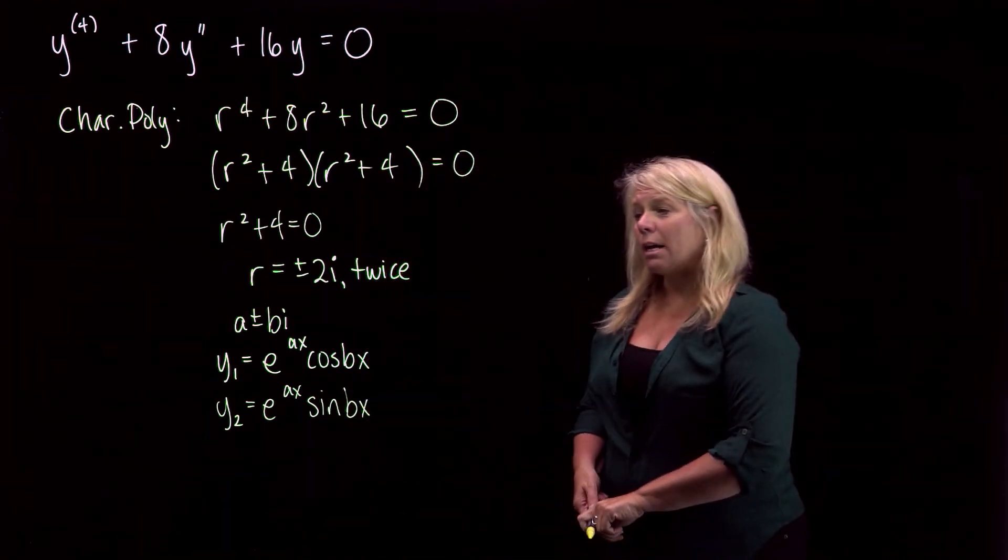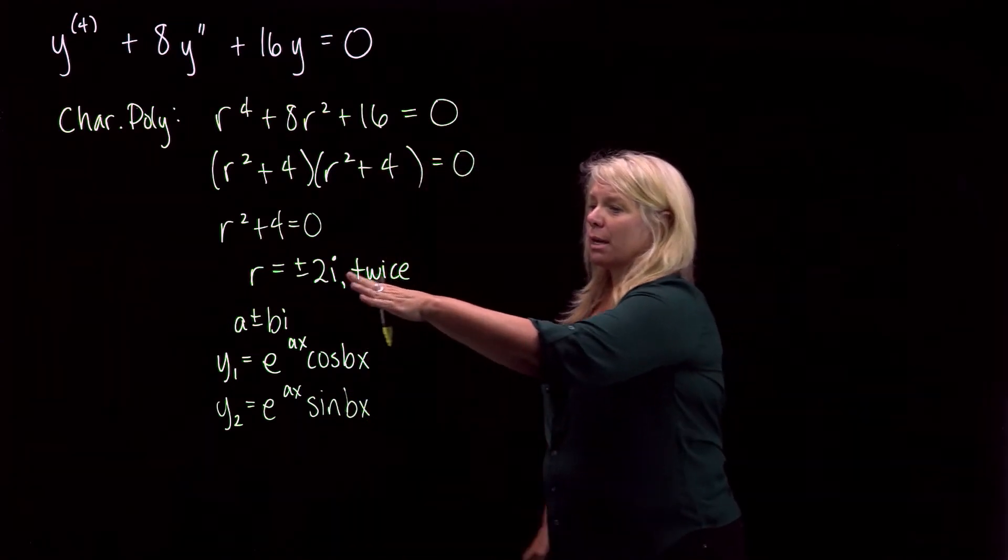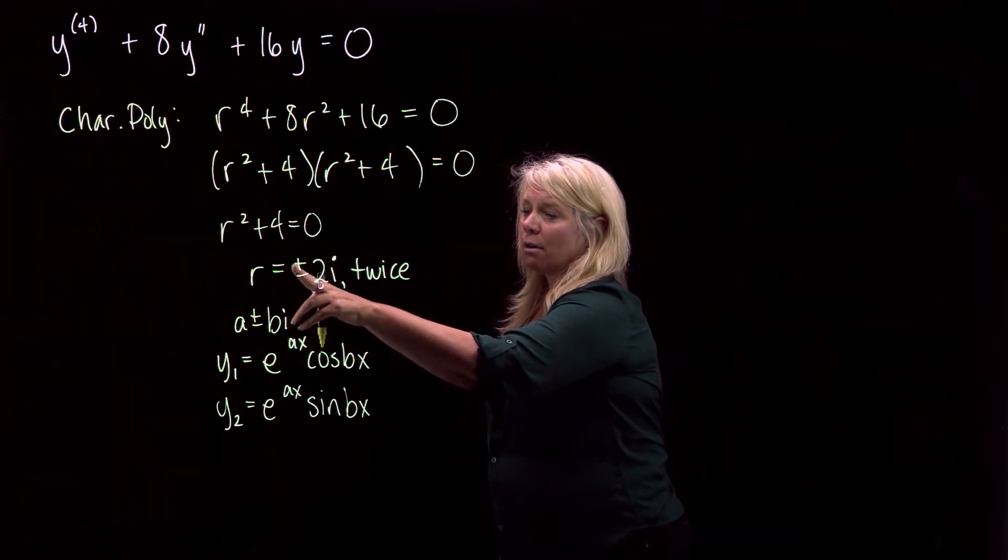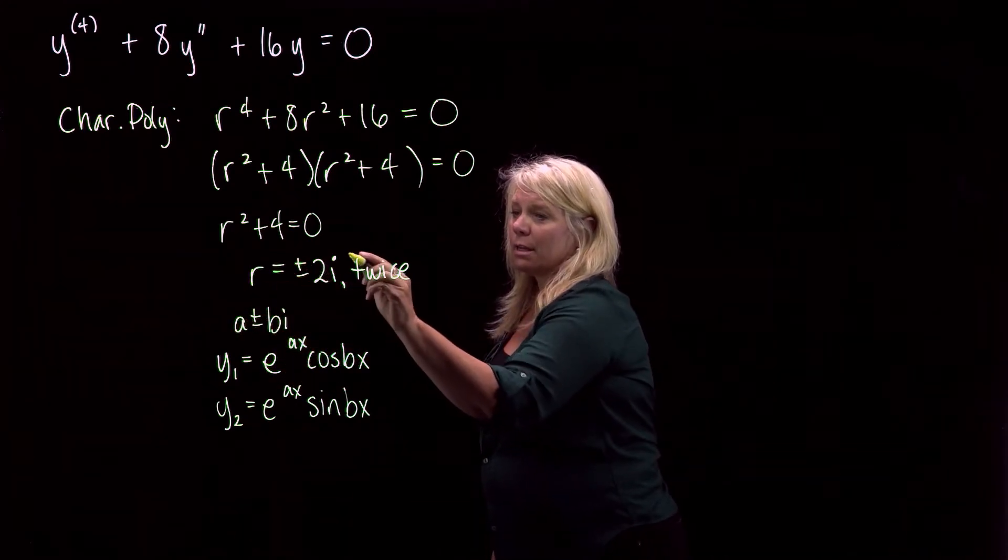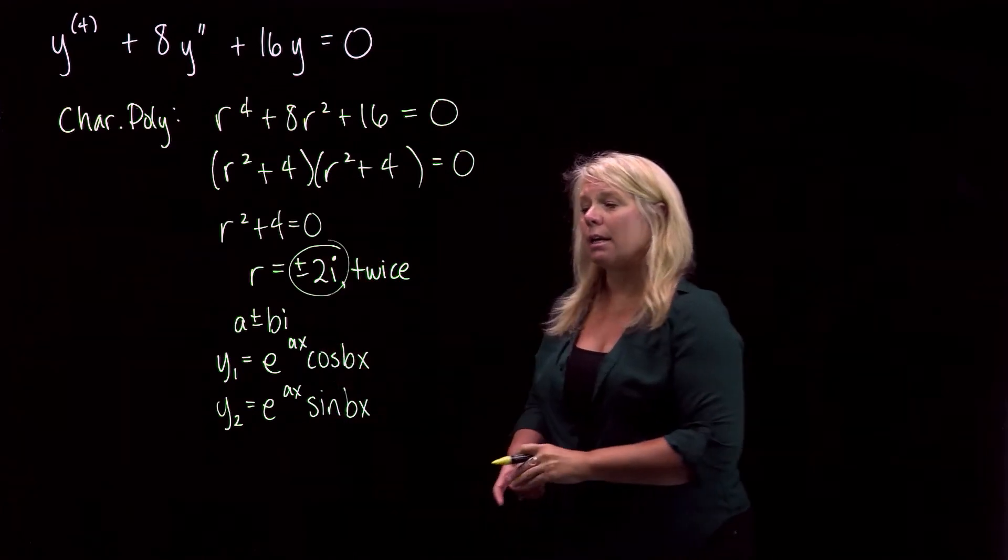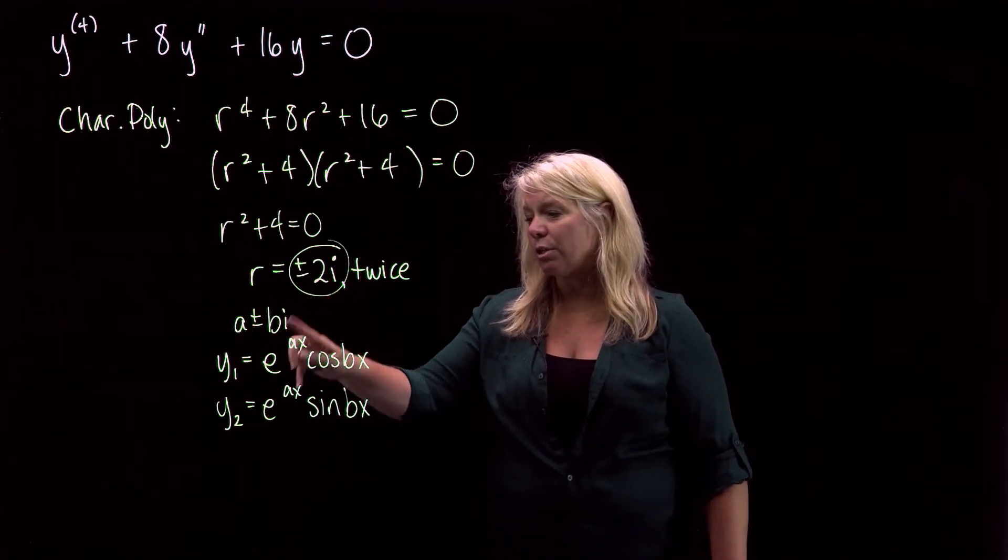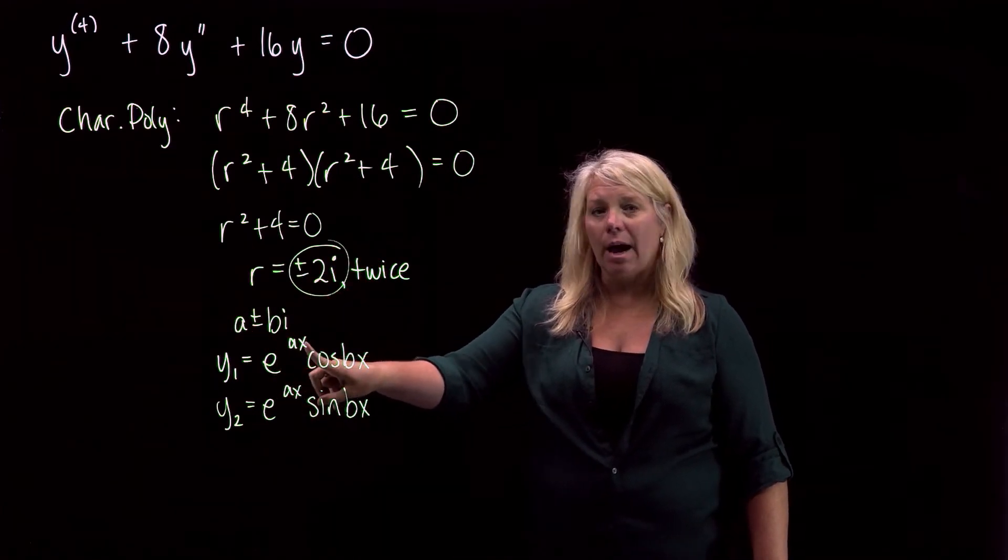Alright, so here we have r equals plus or minus two i, the real part is zero. So the a for these zeros here is zero, and the b is two. So I'll have e to the zero x, which is just one.